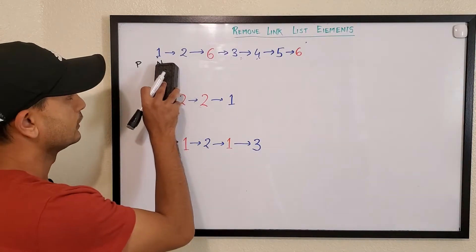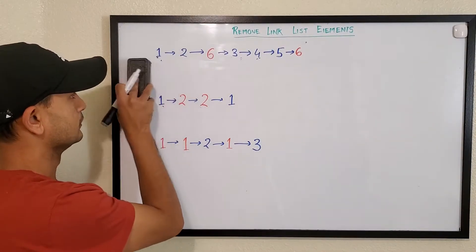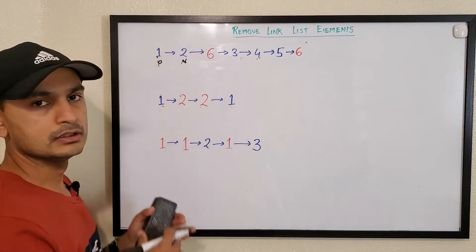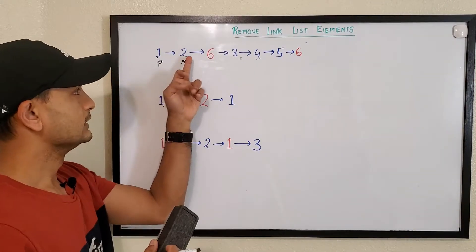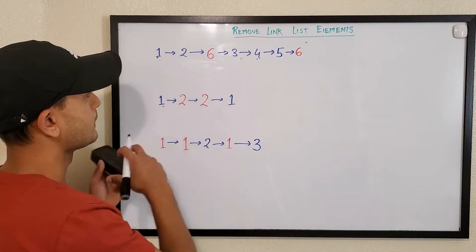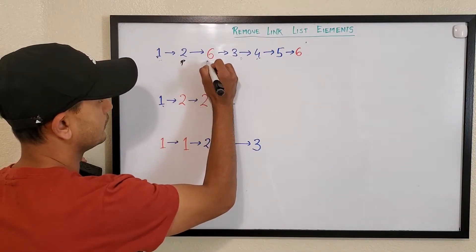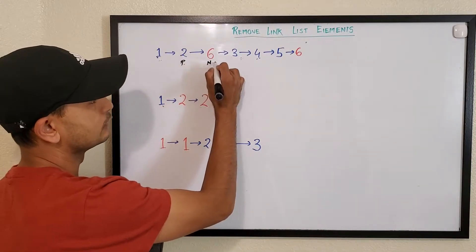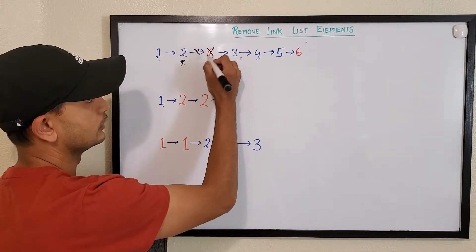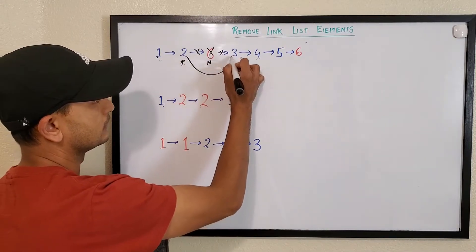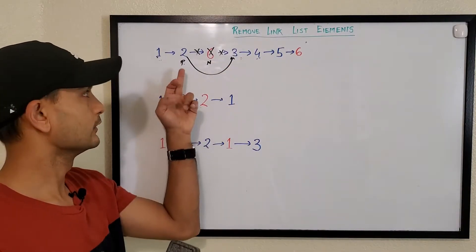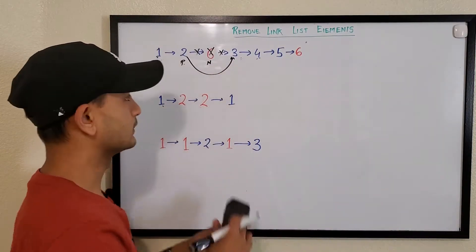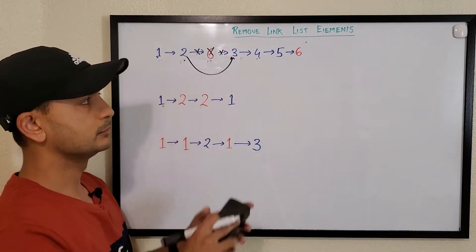Walking through the example: if node is not six, both pointers move to the next positions. Previous moves to be just before node. When node lands on six, we set previous.next equal to node.next, so the six is removed. The linked list is now connected without that six, and we keep doing this until all sixes are removed.